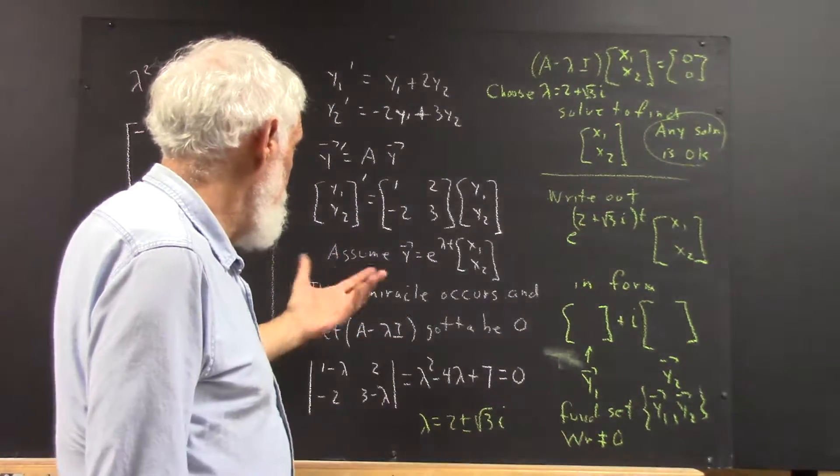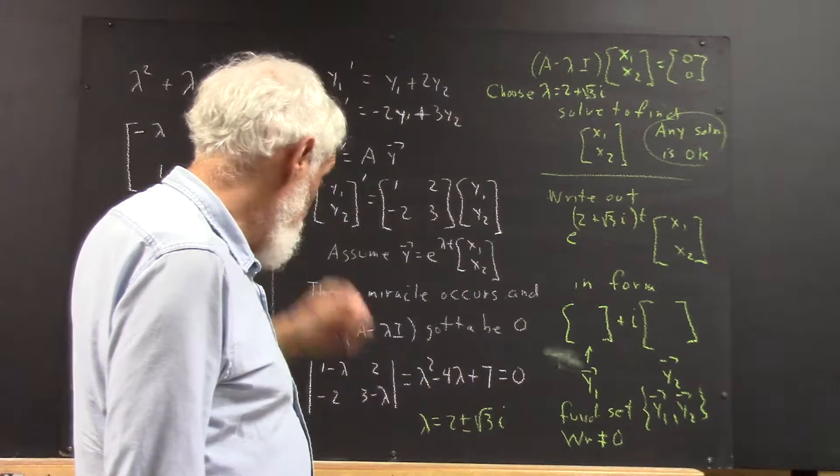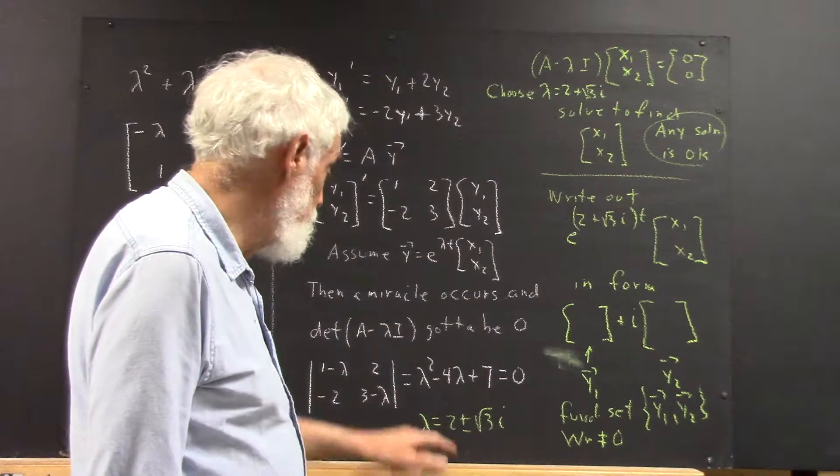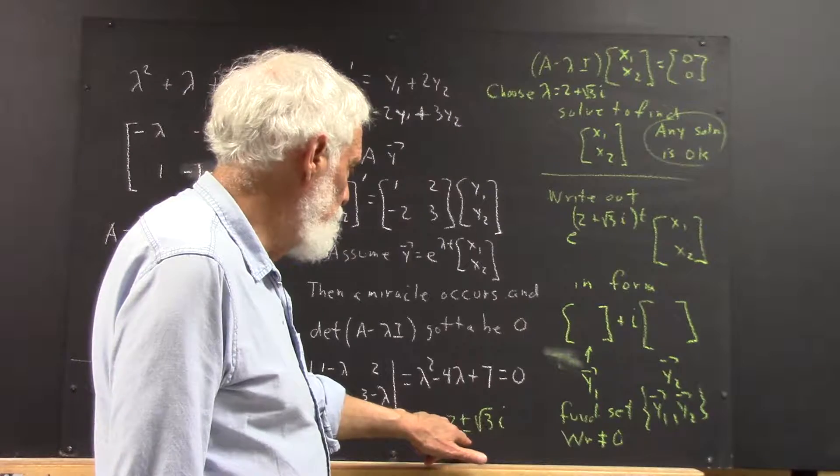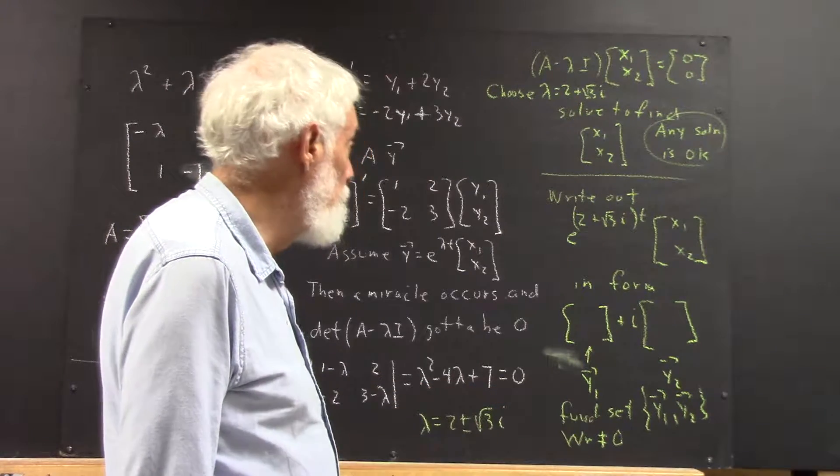Then that gives us the A minus lambda I vector. That's equal to this. And the solutions are lambda equals 2 plus or minus square root of 3i.